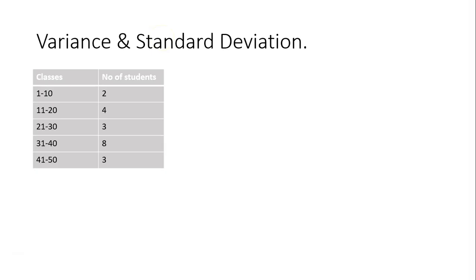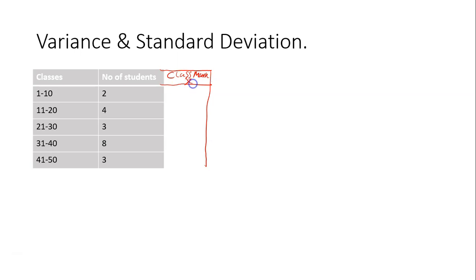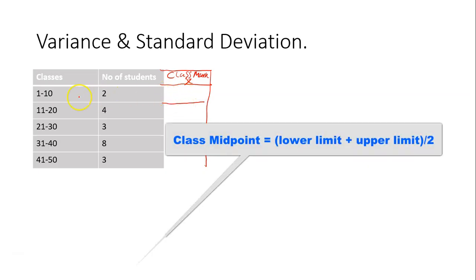Given this grouped data, let's see how to calculate the variance and the standard deviation. To do that, the first thing you're going to do is create a new column for class mark. Class mark is also known as class midpoint. To get a class midpoint for the various classes: